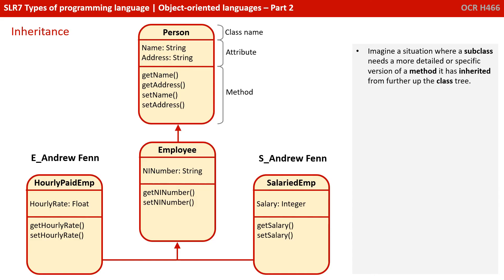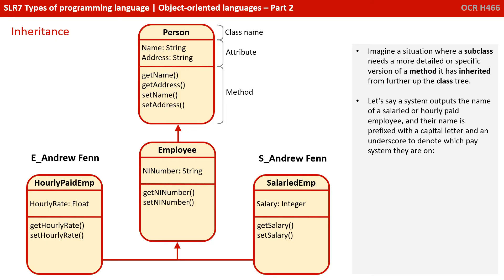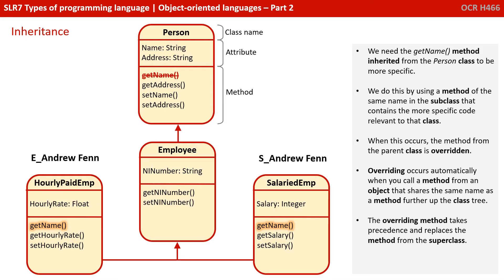Now imagine a situation where a subclass needs a more detailed or specific version of a method that it's inherited from further up the class tree. Let's say a system outputs the name of a salaried or hourly paid employee and the name is prefixed with a capital letter and an underscore to denote which system they are on — capital E underscore for hourly paid and capital S underscore for salary paid. We need the getName method that's been inherited from the person class to be more specific. We do this by using a method of the same name in the subclass that contains the more specific code relevant to that class. When this occurs, the method from the parent class is said to be overridden.